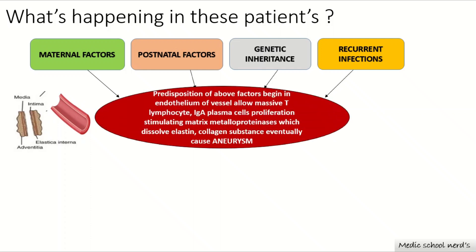Normally our blood vessels have structurally supported layers. These risk factors affect the blood vessel endothelium and trigger massive proliferation of T-lymphocytes, particularly CD8 cells. The ITPKC gene from the genetic predisposition allows the T-cell regulator to promote further proliferation. Other cells including IgA plasma cells, eosinophils, and neutrophils also proliferate in the endothelium, causing damage. This massive proliferation starts to stimulate matrix metalloproteinase enzymes.